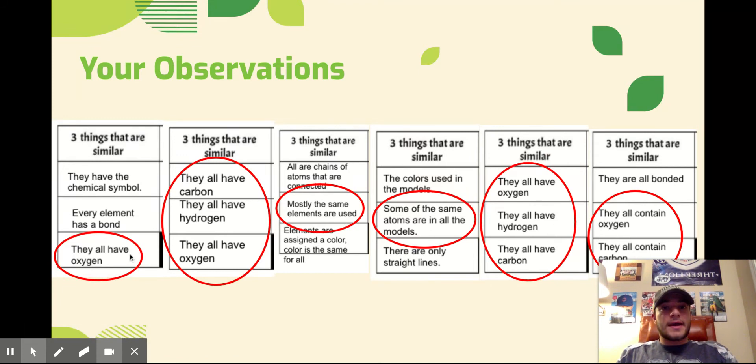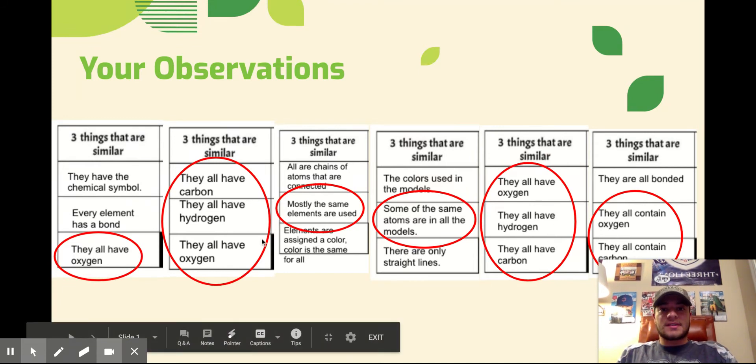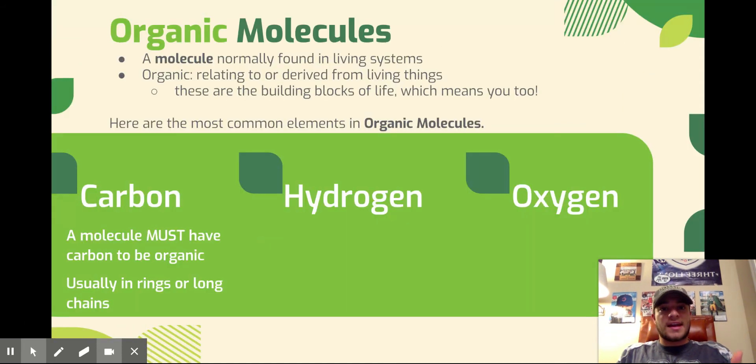And that's a great observation because that brings up something called organic molecules. And what are organic molecules? Organic molecules are molecules that are found in living things. Every single thing that is living has an organic molecule inside of it. That includes us. Why is that important? Because if every single living thing has organic molecules, that means they're the building blocks for life.